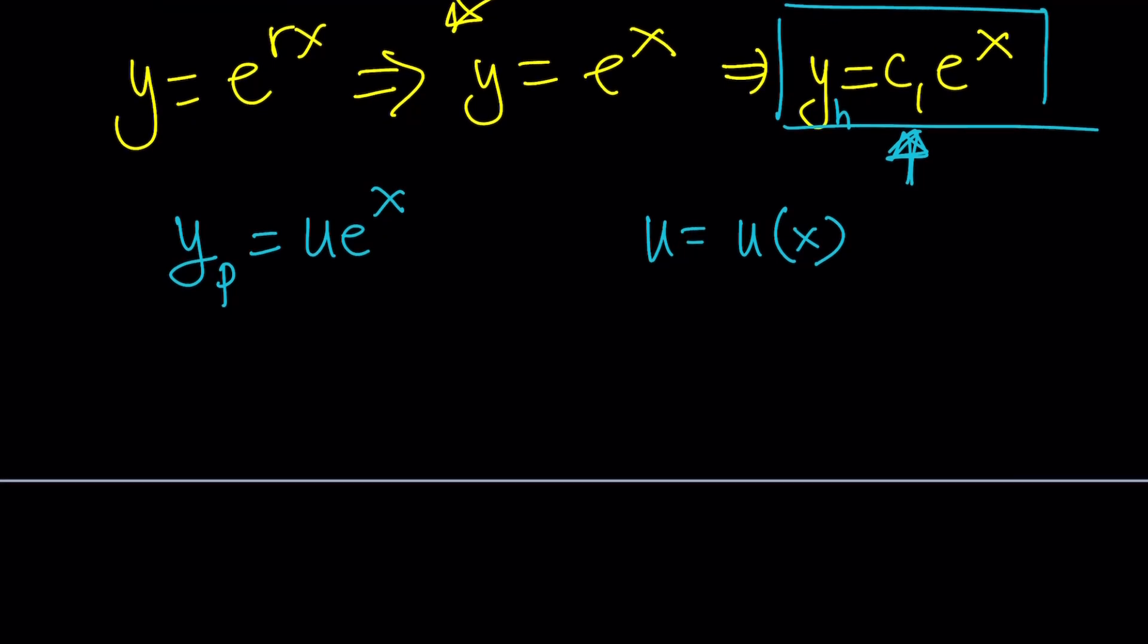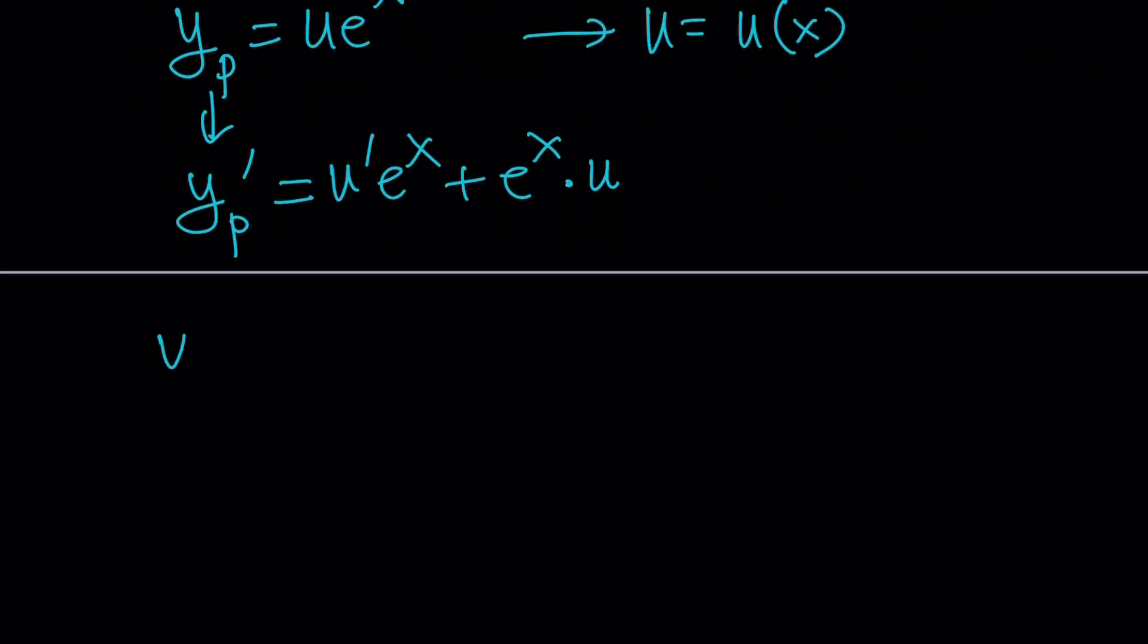The next thing we're going to do is substitute this. But we need to take the derivative. Let's go ahead and differentiate this. We're going to use the product rule. Remember, u is not a constant. It's a function of x. So, the derivative of u multiplied by the second function, plus the derivative of e to the x times the first function. This is y prime.